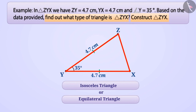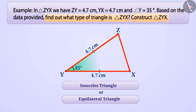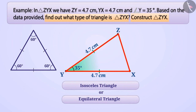Angle Y equals 35 degrees. You will remember that all the angles of an equilateral triangle are 60 degrees. Since the measure of angle Y is not 60 degrees, triangle ZYX cannot be an equilateral triangle, which means it is definitely an isosceles triangle. By properly understanding the information provided, you can answer any question correctly.